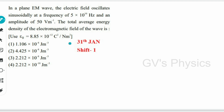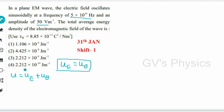Next, from 31st January shift 2: in a plane electromagnetic wave, they give the frequency and maximum electric field E₀, and ask for the total average energy density. The total average energy density U = u_E + u_B. Since the energy densities of the electric and magnetic fields are equal, we write U = 2u_E = 2 × (1/2) ε₀ E_rms² = ε₀ · (E₀²/2). The 2s cancel, leaving U = (1/2) ε₀ E₀².